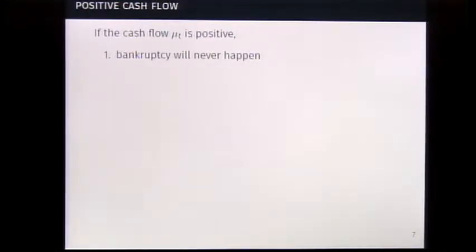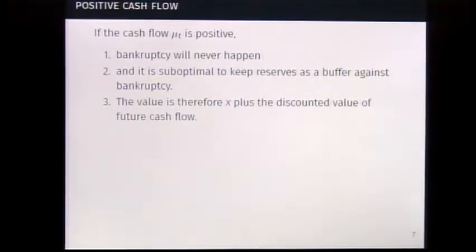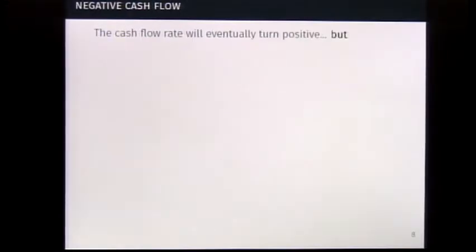What do we know? We know that bankruptcy will never happen because we will always have influx of money. We will never lose money and turn negative. So since bankruptcy will never happen, it would be suboptimal to keep reserves as a buffer against bankruptcy. Therefore, the value is the initial cash plus the discounted value of future cash flow. Everything is explicit. We solve the ODE, we plug in, and the actual values are not important.